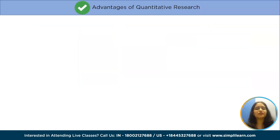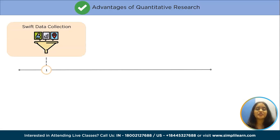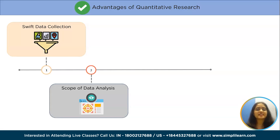What are the advantages of using quantitative research? The first is swift data collection. Quantitative research looks at a sample of people who represent a wider population. Information from these participants is gathered using a survey or another quantitative research technique. The application of statistics facilitates and accelerates the process of data analysis and pattern discovery. Additionally, this approach allows for a broad range of data acquisition because of statistics.